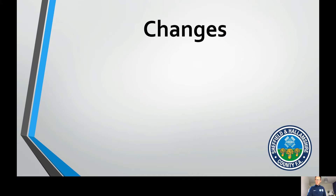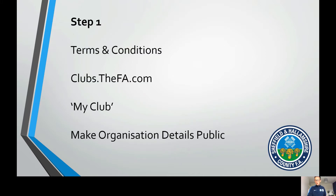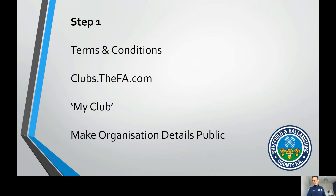So first up, we're hitting changes. Step one of the affiliation process is going to look a lot different to what it previously did. It will now only ask you to tick a terms and conditions box and agree to it, rather than inputting all of your club's information. That information is still really relevant, so we don't want you to miss out on ensuring it is up to date. You can go to clubs.thefa.com and click on your My Club tab — this is where you can put all your information in.